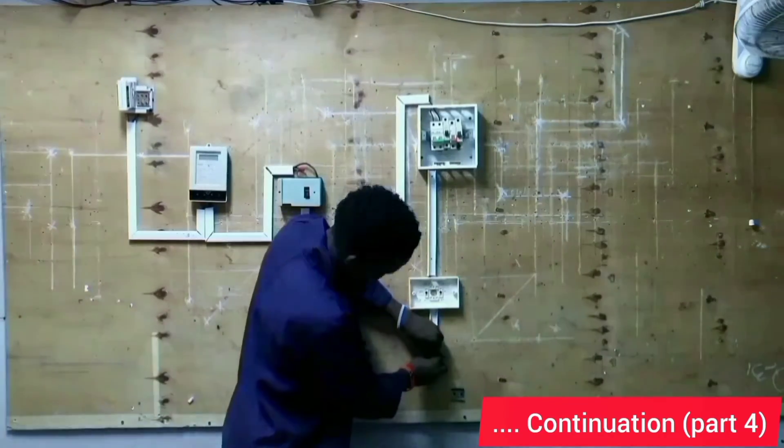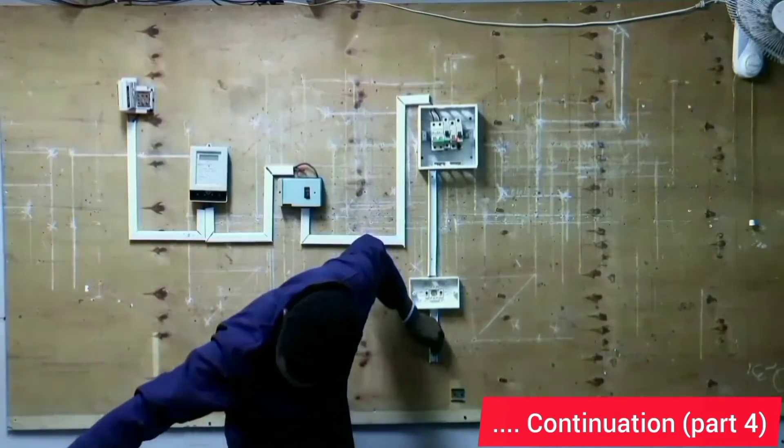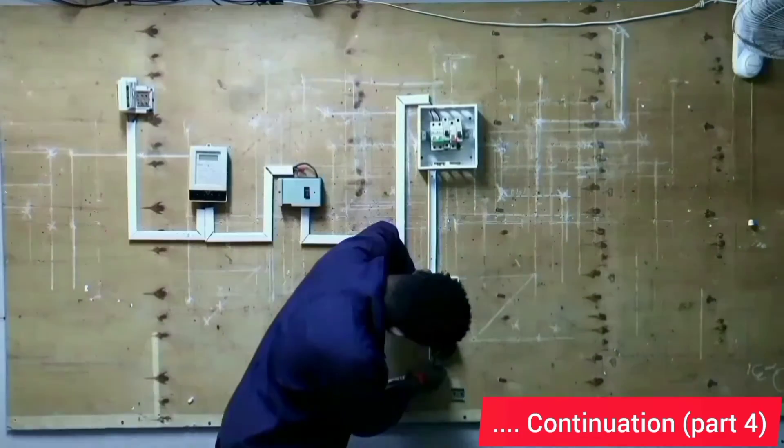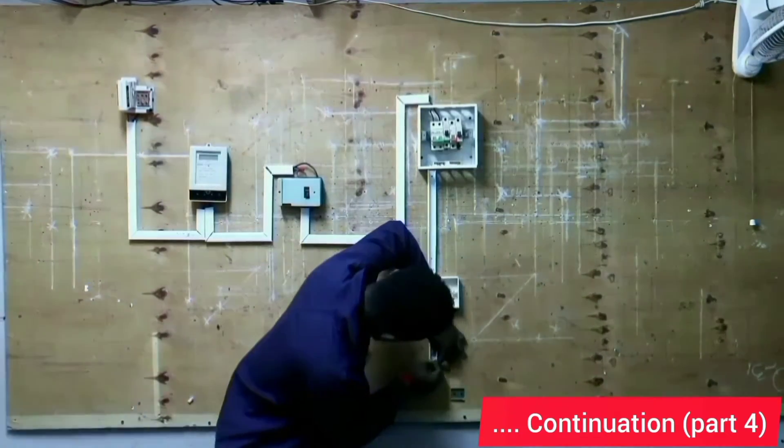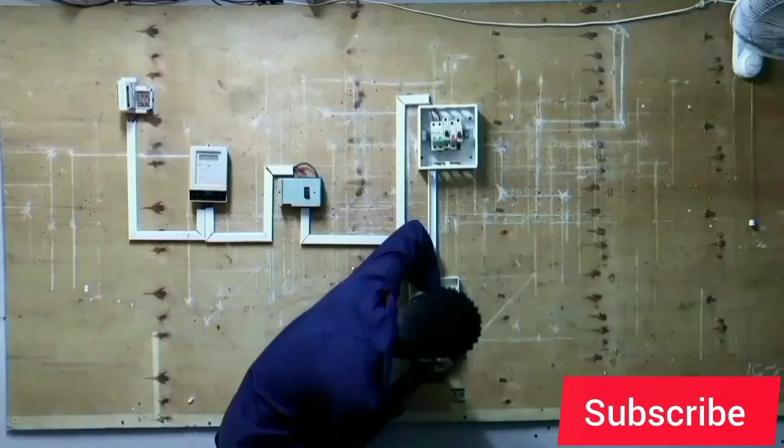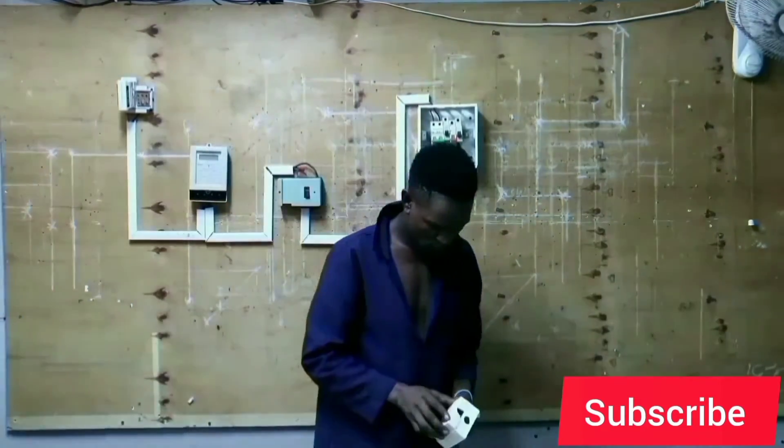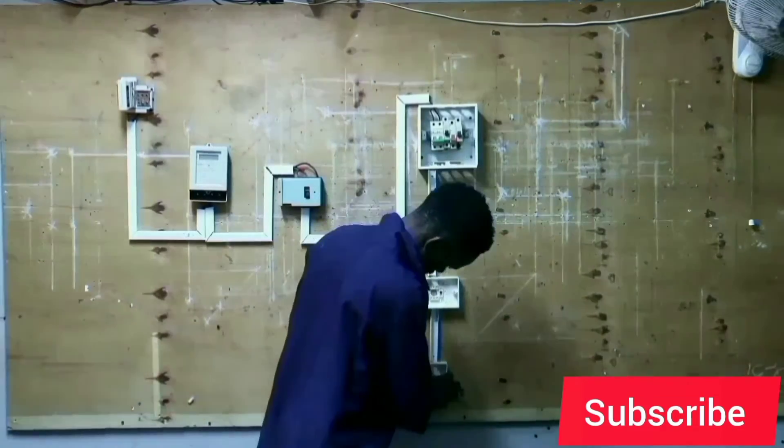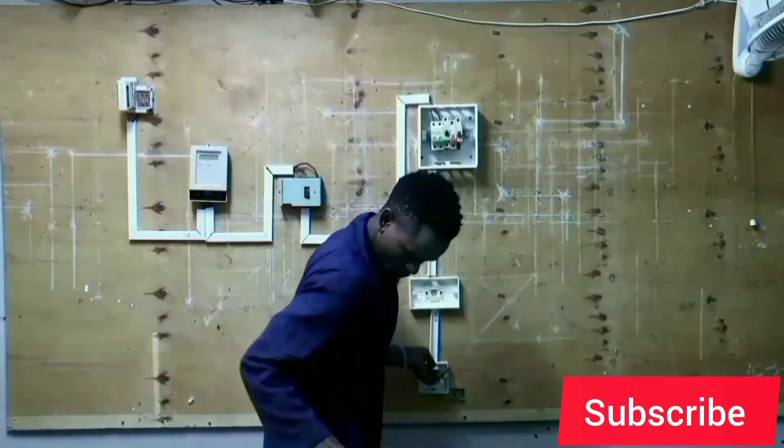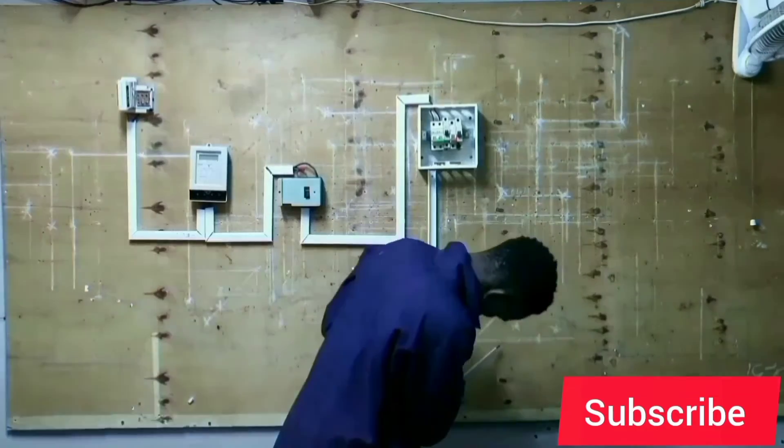We connect the cooker control unit from a 32 amp MCB using a cable of 4.0 mm². This cooker control unit incorporates a cooker control unit switch and a cooker socket outlet. The switch acts as an isolator for on-load isolation and also provides means of switching.